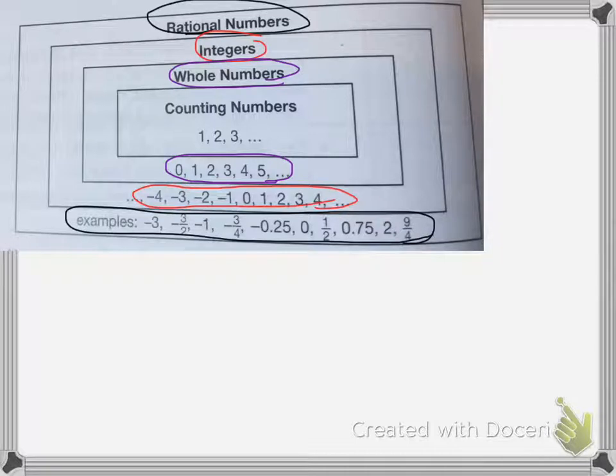Inside of that, we have counting numbers, which are the numbers from 1 to infinity: 1, 2, 3, 4, 5, continuing on and on.